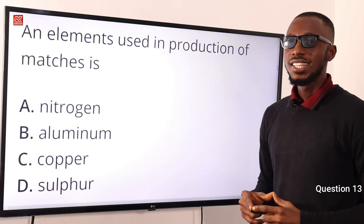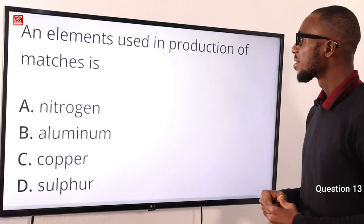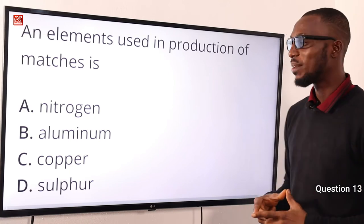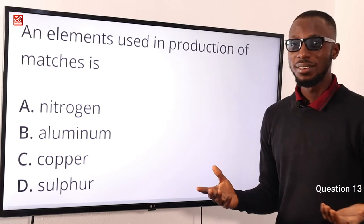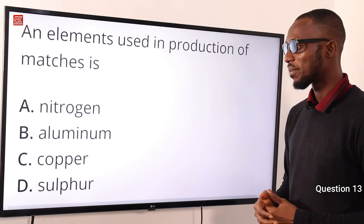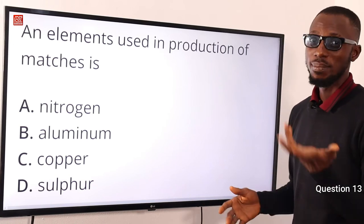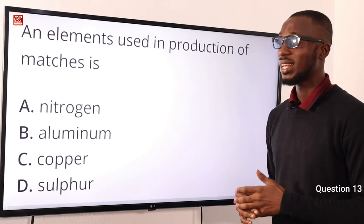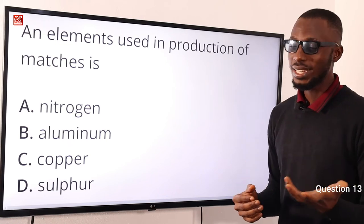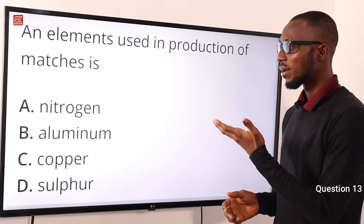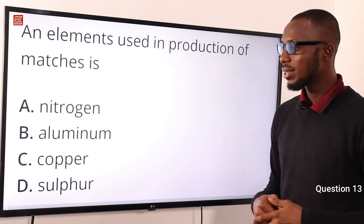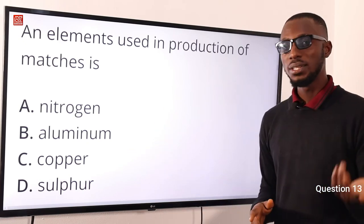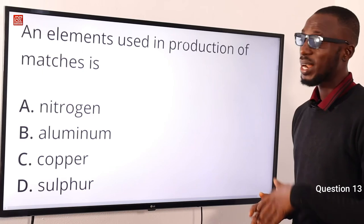Number 13. An element used in the production of matches is what? That element is sulfur, also used in other fireworks and as a bleaching agent. Nitrogen is used as a cooling agent. Aluminum can be used to make cooking utensils. Copper is used for plumbing or roofing materials.